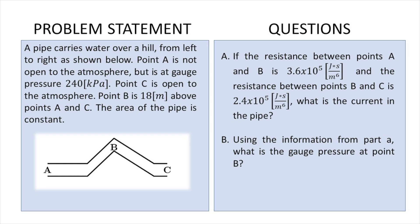The area of the pipe is constant. The first thing they're asking us is: if the resistance between points A and B is 3.6 times 10 to the 5, and the resistance between points B and C is 2.4 times 10 to the 5 joules-seconds divided by meters to the 6, what is the current in the pipe?